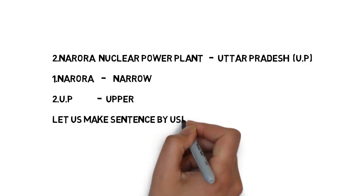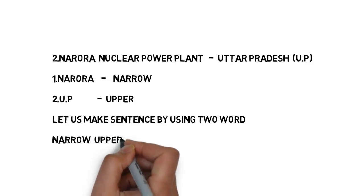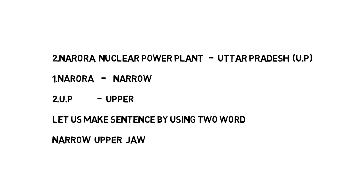Now I am going to use these two keywords to make a meaningful sentence: 'Narrow upper jaw.' Narrow upper jaw means the front teeth. In this sentence, 'narrow' means Narora nuclear power plant, and 'upper' means Uttar Pradesh. If you remember this sentence, you can easily remember the power plant name and its place.